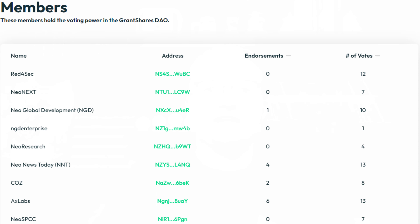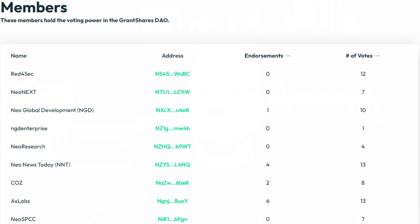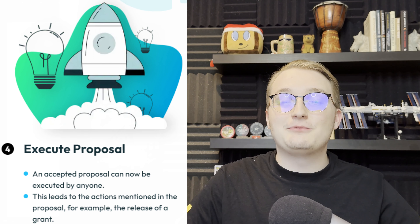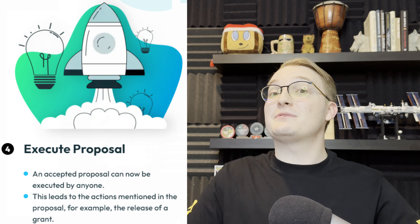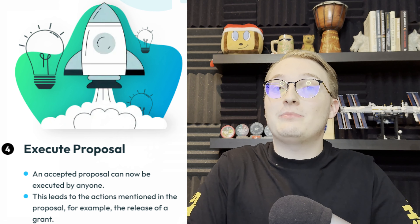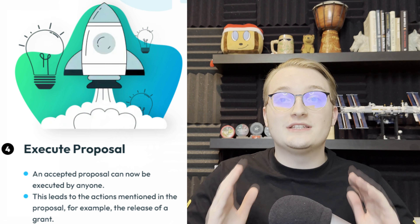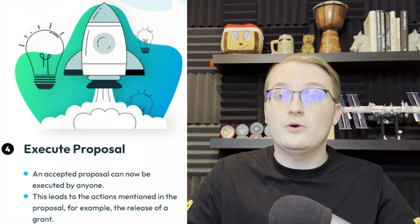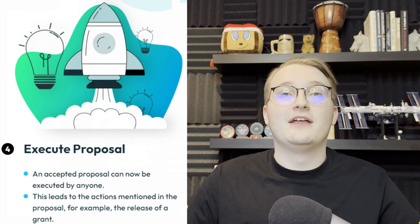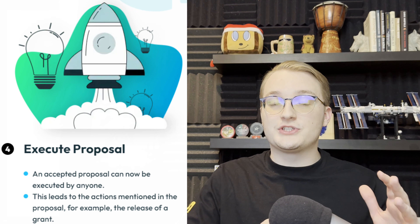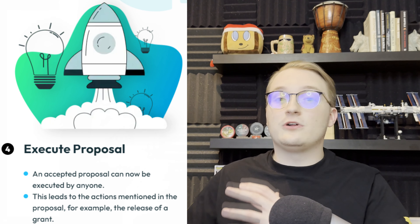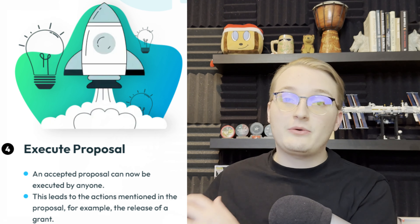Once on-chain, it is up to the members to vote on a proposal, and once that proposal is endorsed, it's open for voting for any of the members. Once the voting phase is over and the proposal is accepted, it gets queued for a short period of time, or in other words, a time lock, before the proposal can be successfully executed and funded.